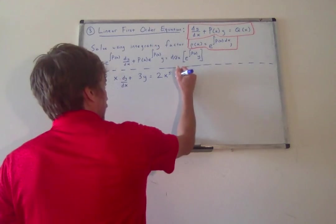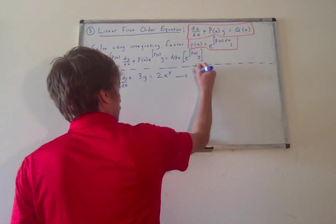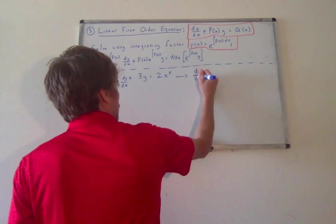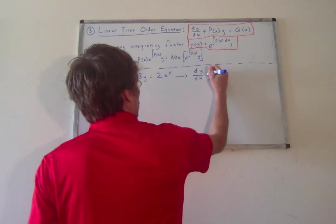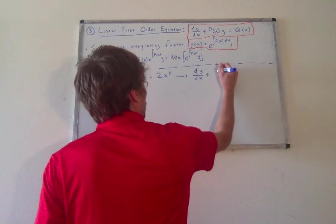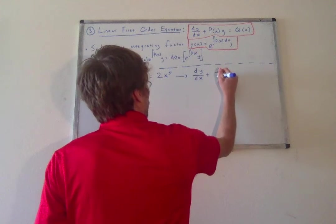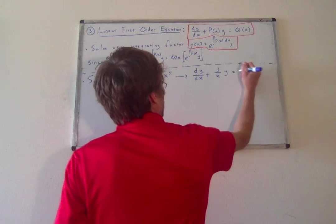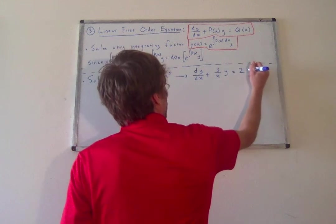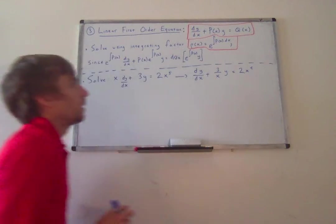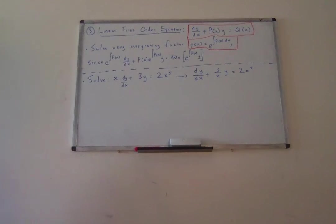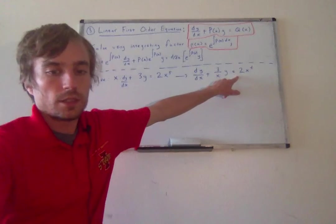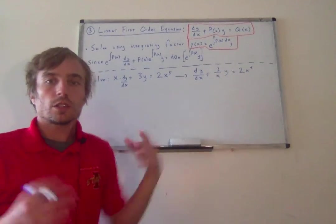If we divide by x, we transform this into the equation dy/dx plus 3 over x times y equals 2x to the fourth. Now notice, this is our P(x), this is our Q(x), and this is in the correct form.